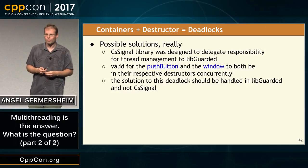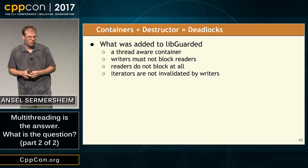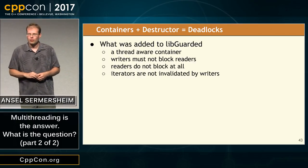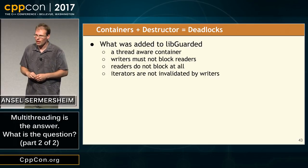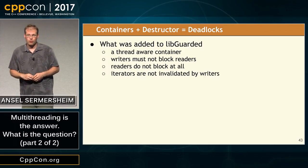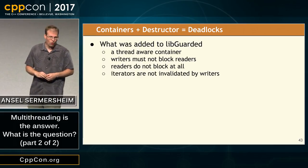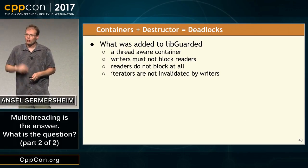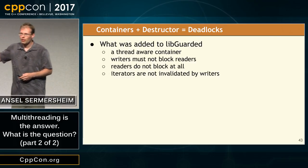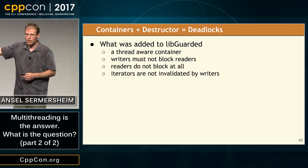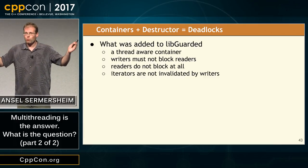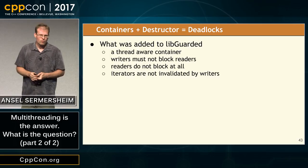Here are the properties we need: a thread-aware container — not just a thread-aware object — where writers don't block readers, readers don't block at all, and iterators are not invalidated when the container is modified. If I had these properties, as the writer of the signal library I can write my code and it will just work. So how do we provide this abstraction in LibGuarded?